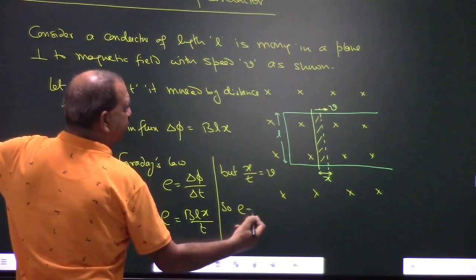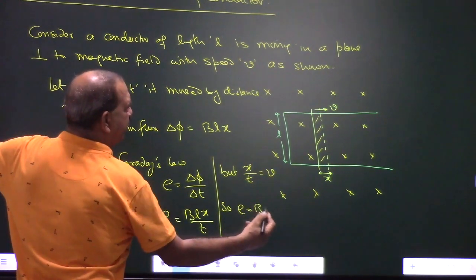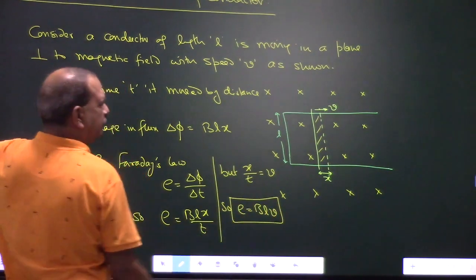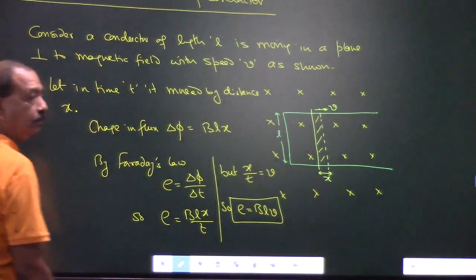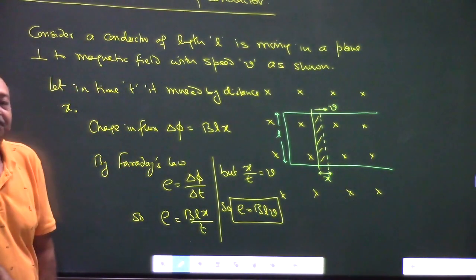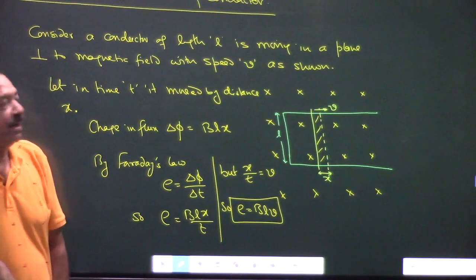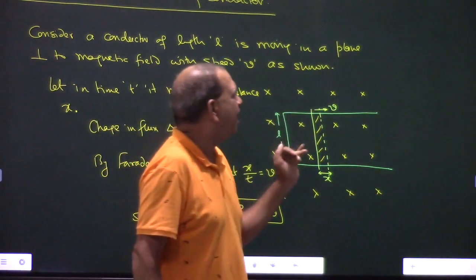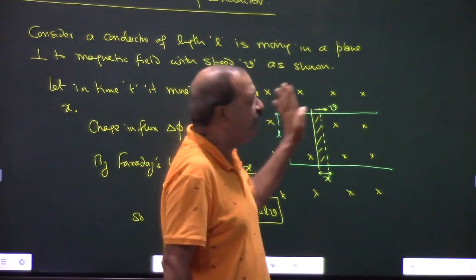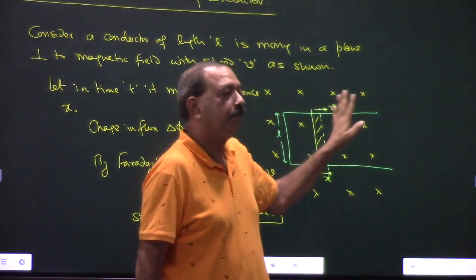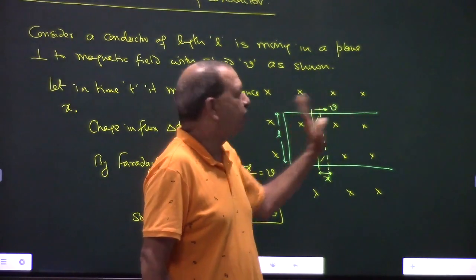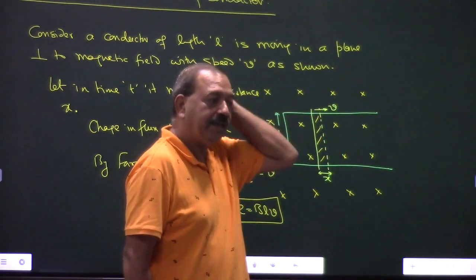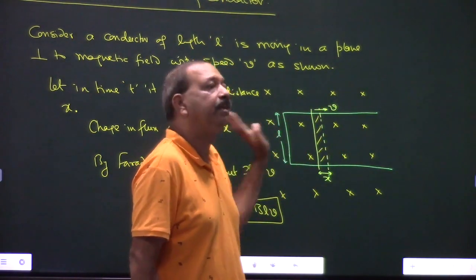So E equals BLx upon t. It is not going out of field or into the field — it is moving within the field.